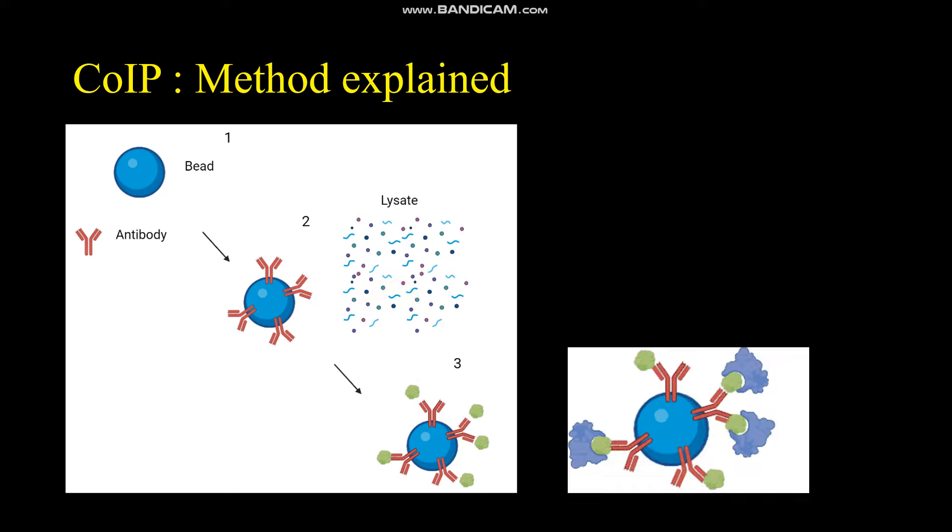In co-IP, we can identify protein-protein interactions or protein complexes. We perform the classic IP experiment. And when we're finished, we might have taken along some protein interactors like these blue proteins which interact with the green protein.